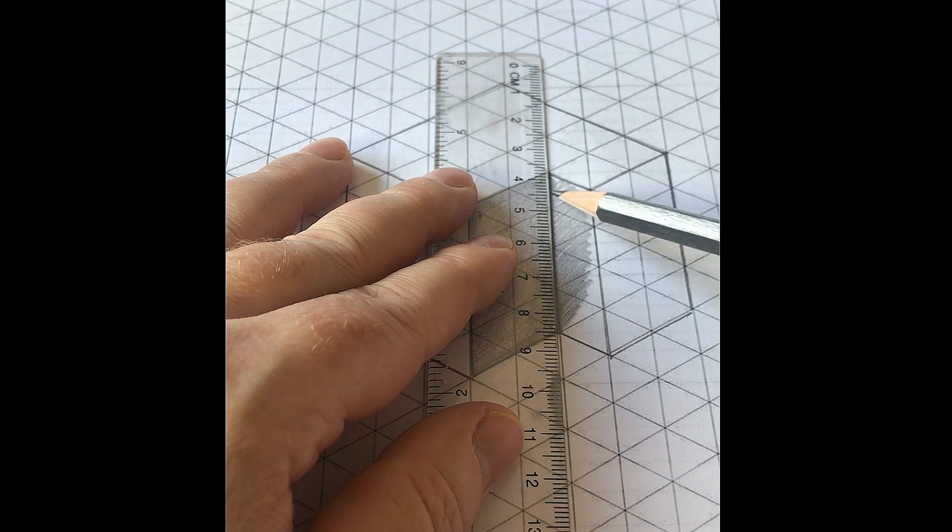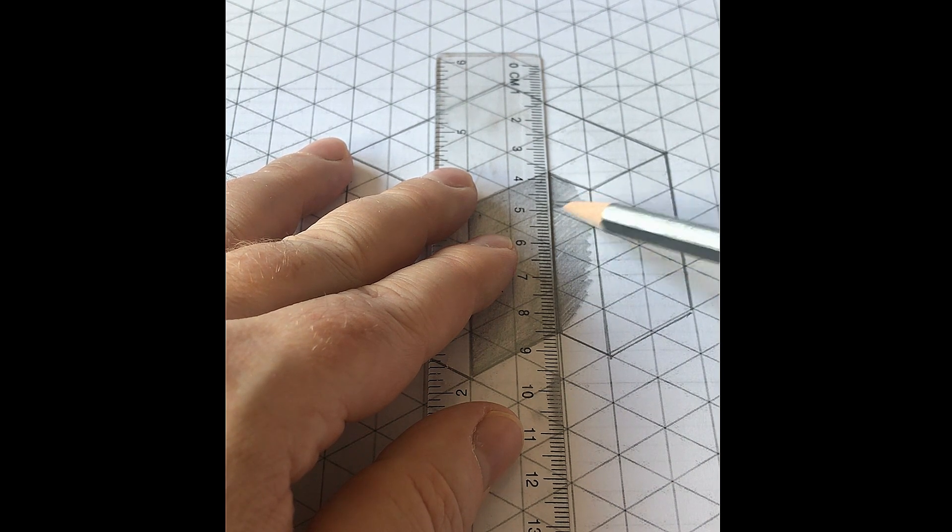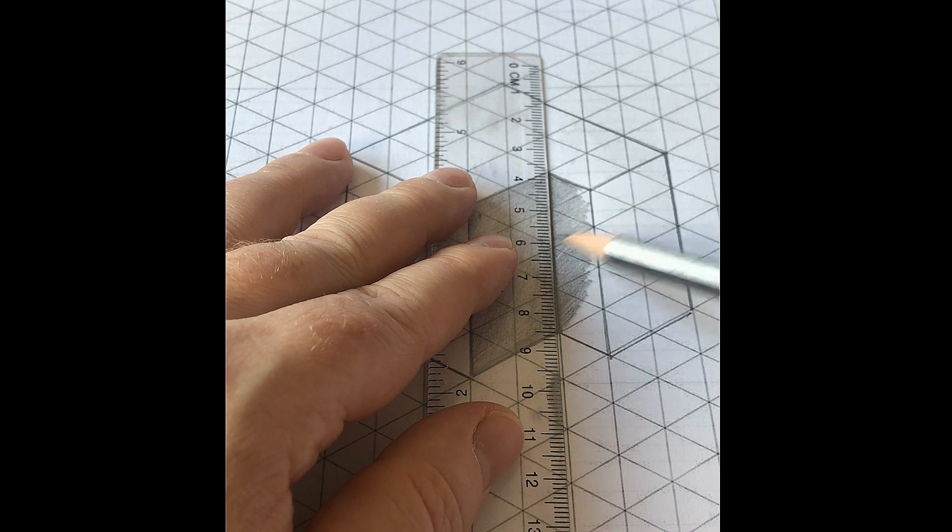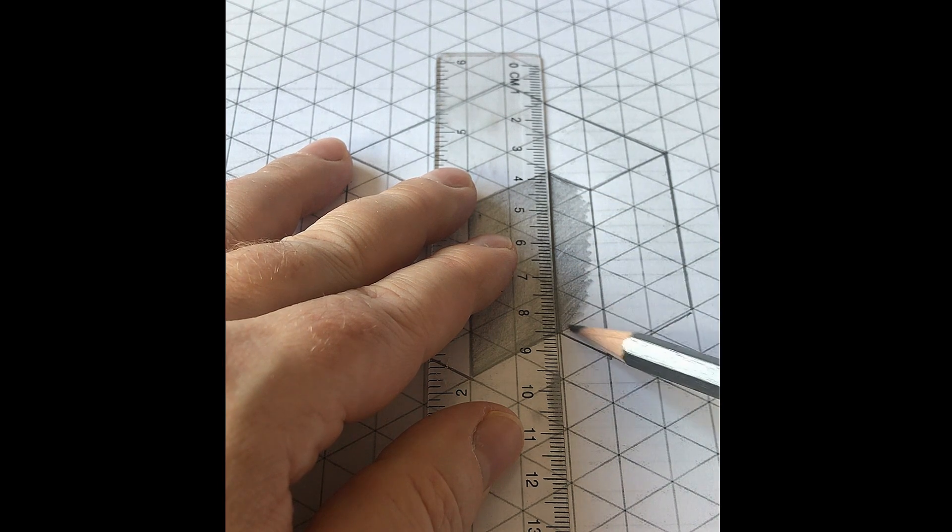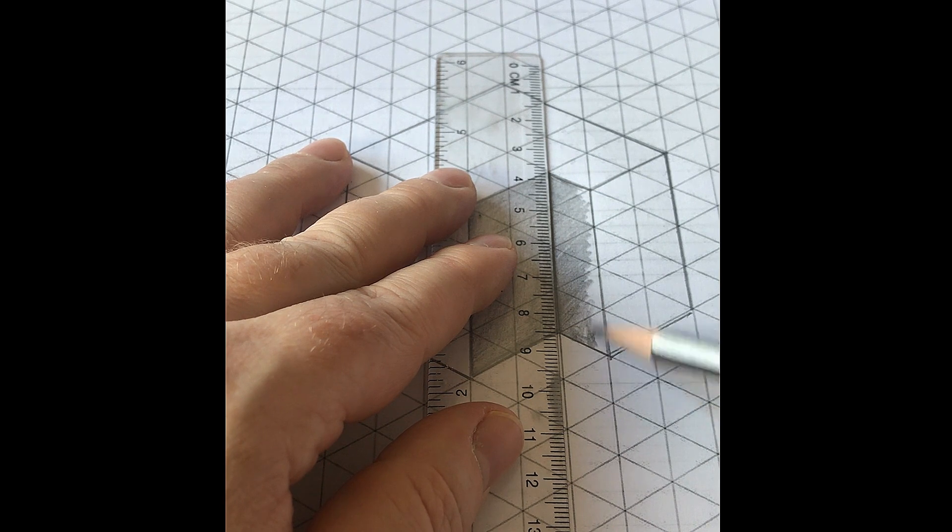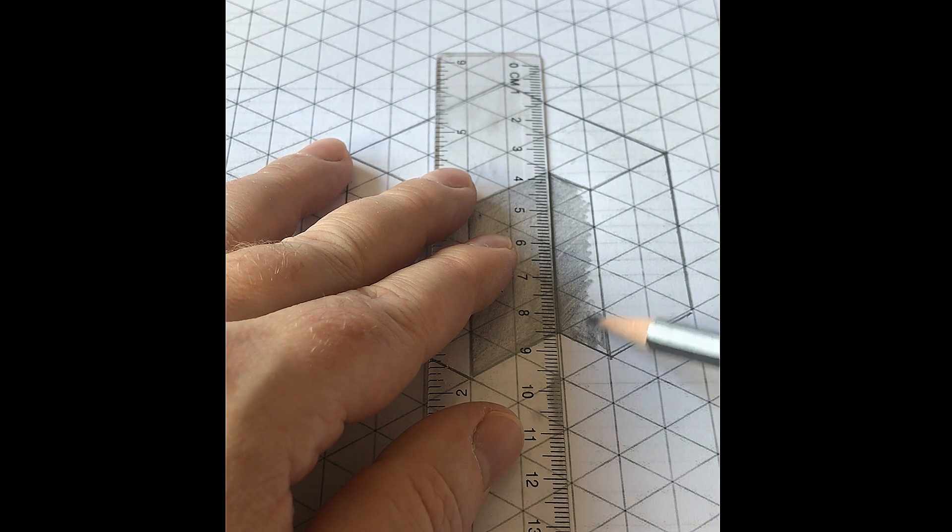I'm going to add some darker shading, pressing harder with the pencil. This will create that three-dimensional effect with the drawing.